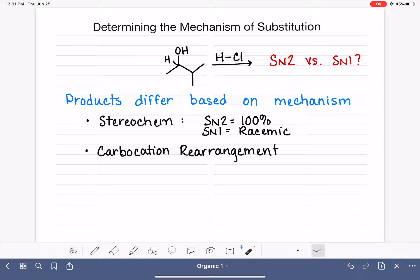The carbocation rearrangement has the potential to change the whole entire carbon skeleton of the molecule. But on a lesser level, it changes the position of the incoming nucleophile. So it creates a totally different constitutional isomer from the SN2 product.